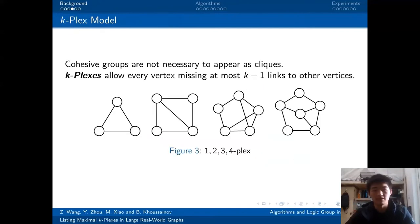However, clique models still have some frictions. For example, cohesive groups are not necessary to appear as cliques in real life. Therefore, k-plex, a relaxed model was proposed. A k-plex allows every vertex to miss at most k-1 edges to other vertices. As you can see, the parameter k here represents the tolerance for data noise. Especially, a 1-plex is just a clique.